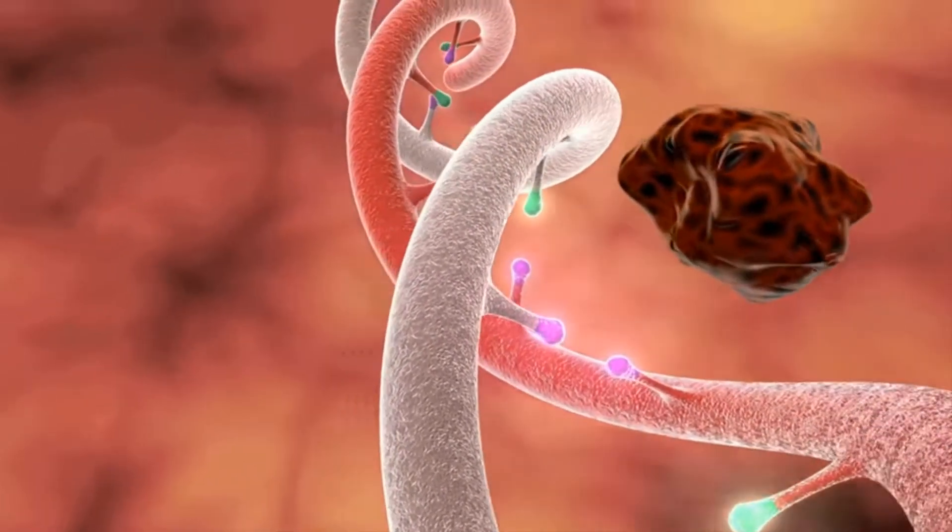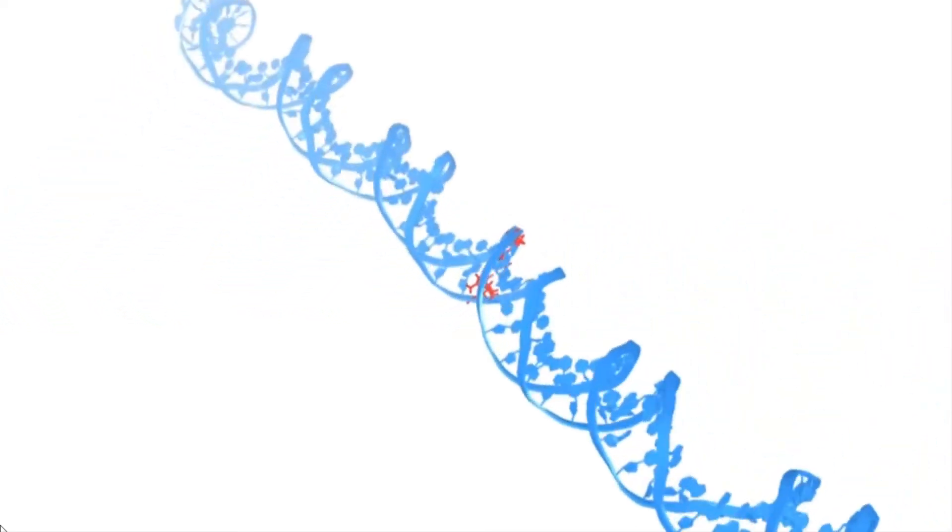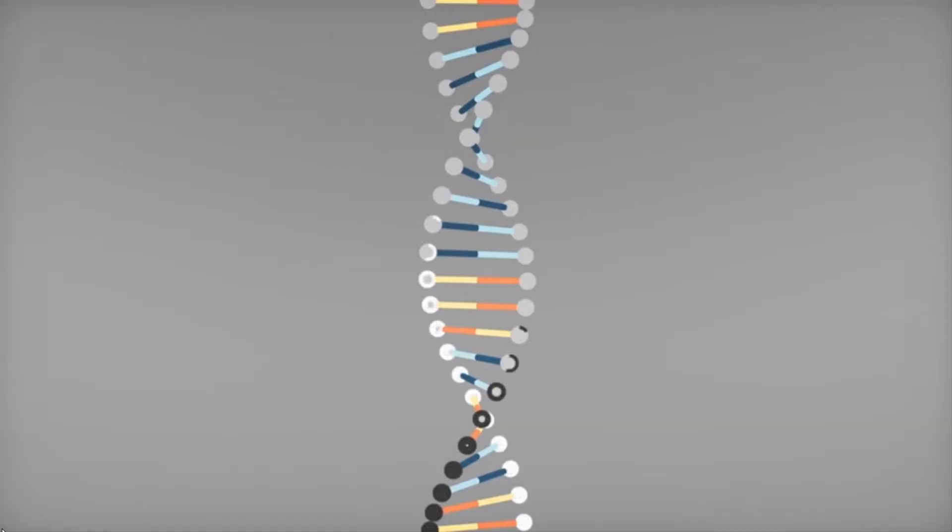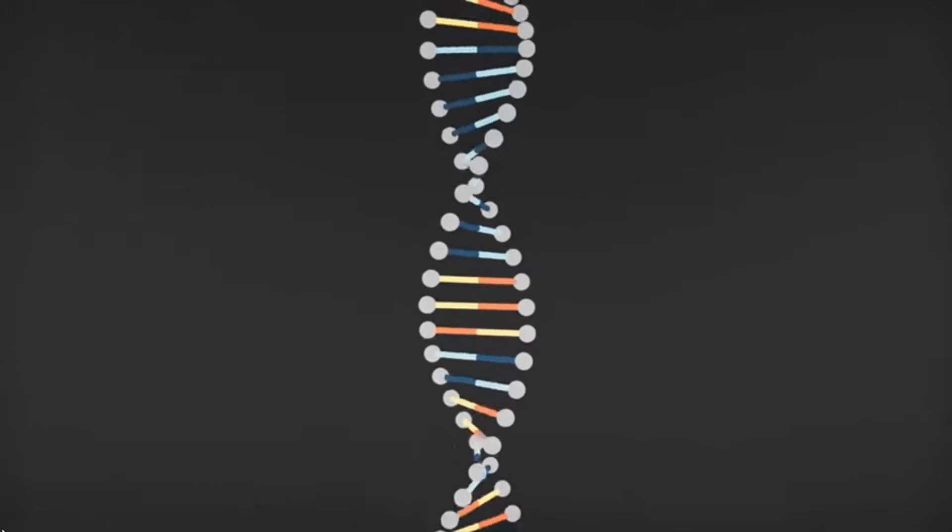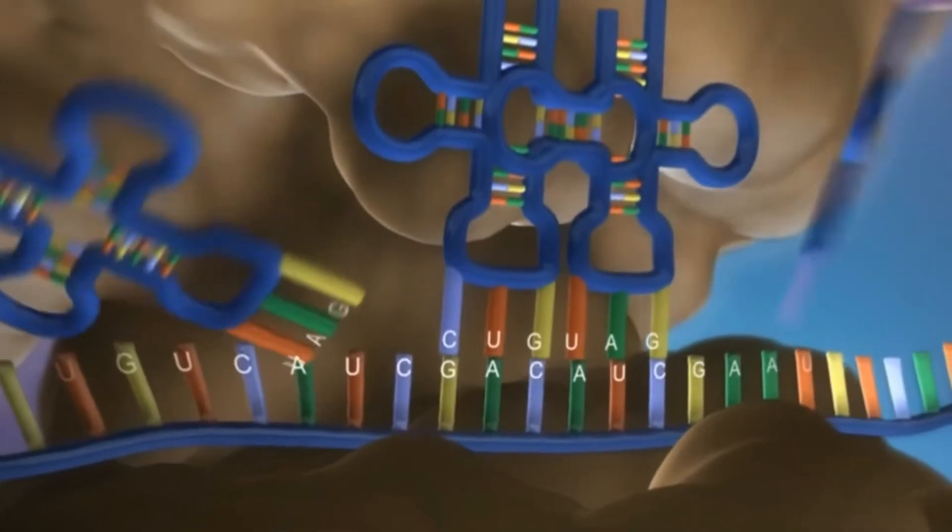the shorter mutated version of the gene they found interferes with the way RNA is spliced together, a crucial step in the process of using a gene to produce a protein, which prevents the protein from forming correctly.